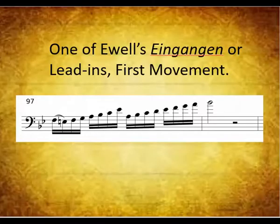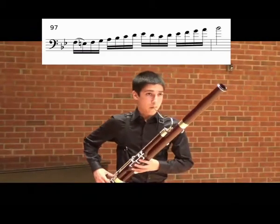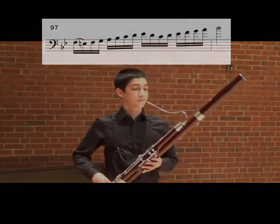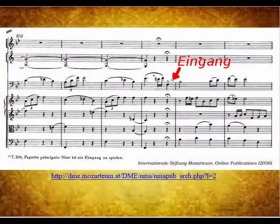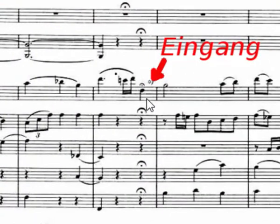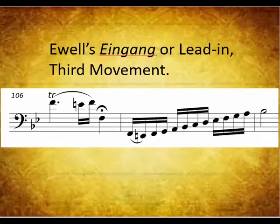Here is one of my examples of the Eingang for the first movement. Vincent's Eingang is a variation on mine. There is also an Eingang needed in the third movement in measure 106. Again, the fermata is an indication that additional music by the soloist is required here. Notice at the bottom of the score the editor even points out the requirement to add the lead-in. Here is my Eingang for the third movement.